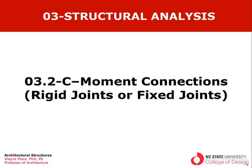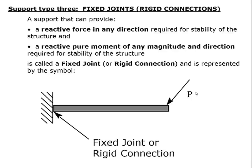We're dealing with moment connections, sometimes referred to as rigid joints or fixed joints. Those three expressions shall be taken to mean one and the same thing, and we will use them interchangeably. A fixed connection, a rigid connection, or a moment connection are basically all the same thing.